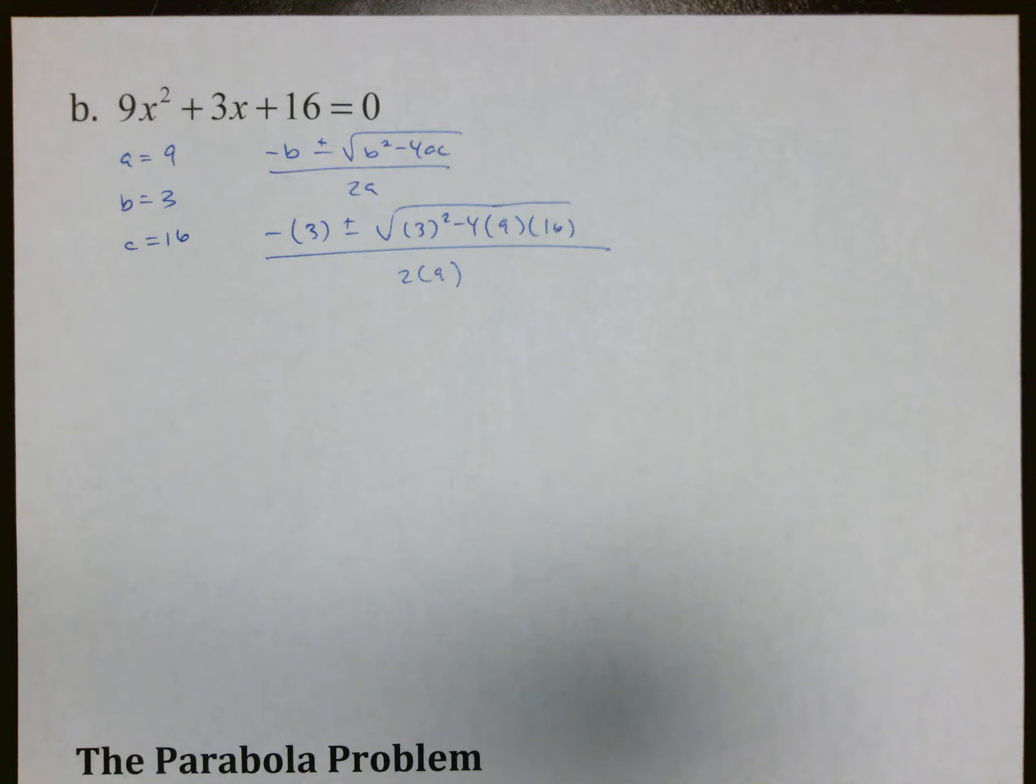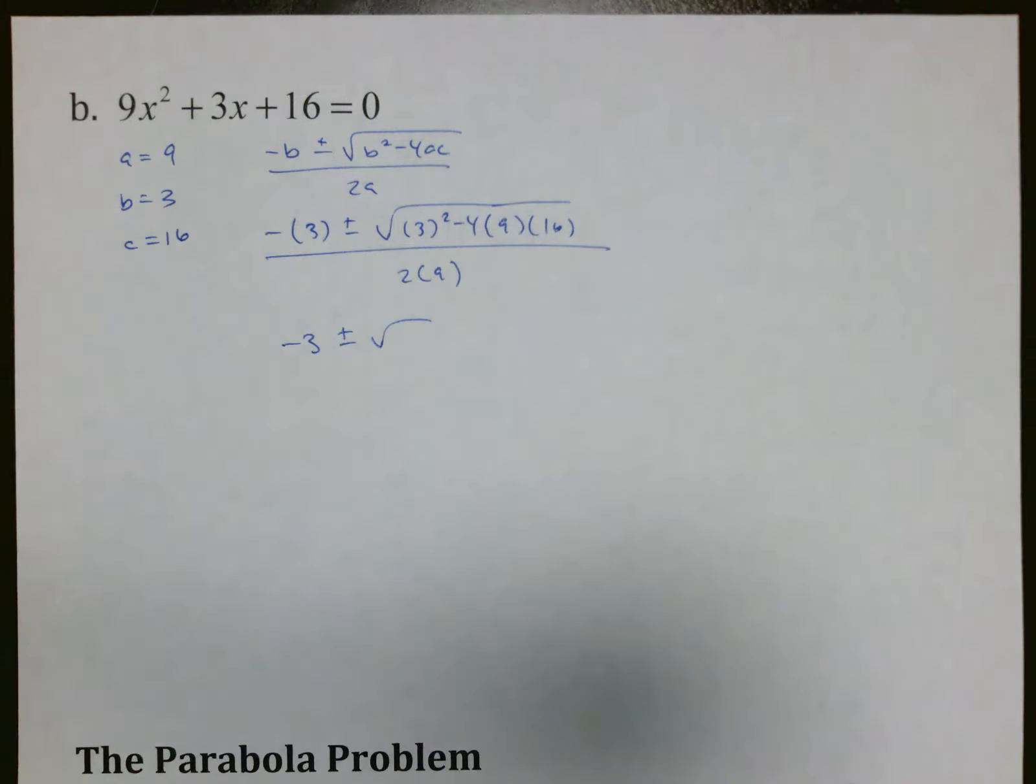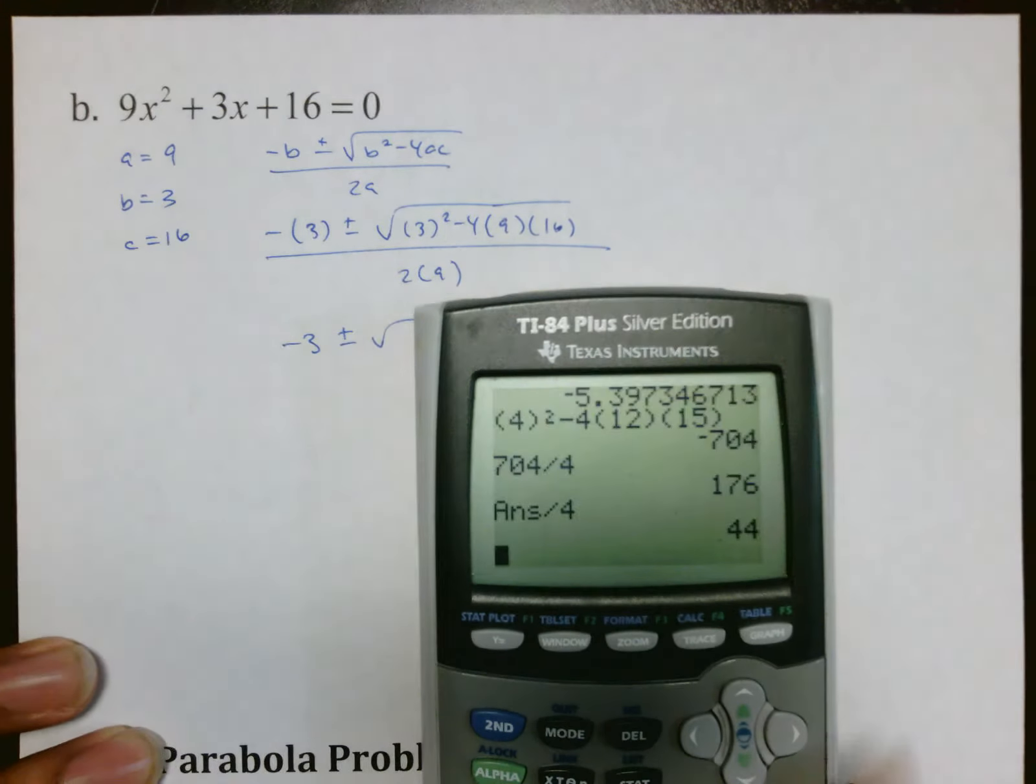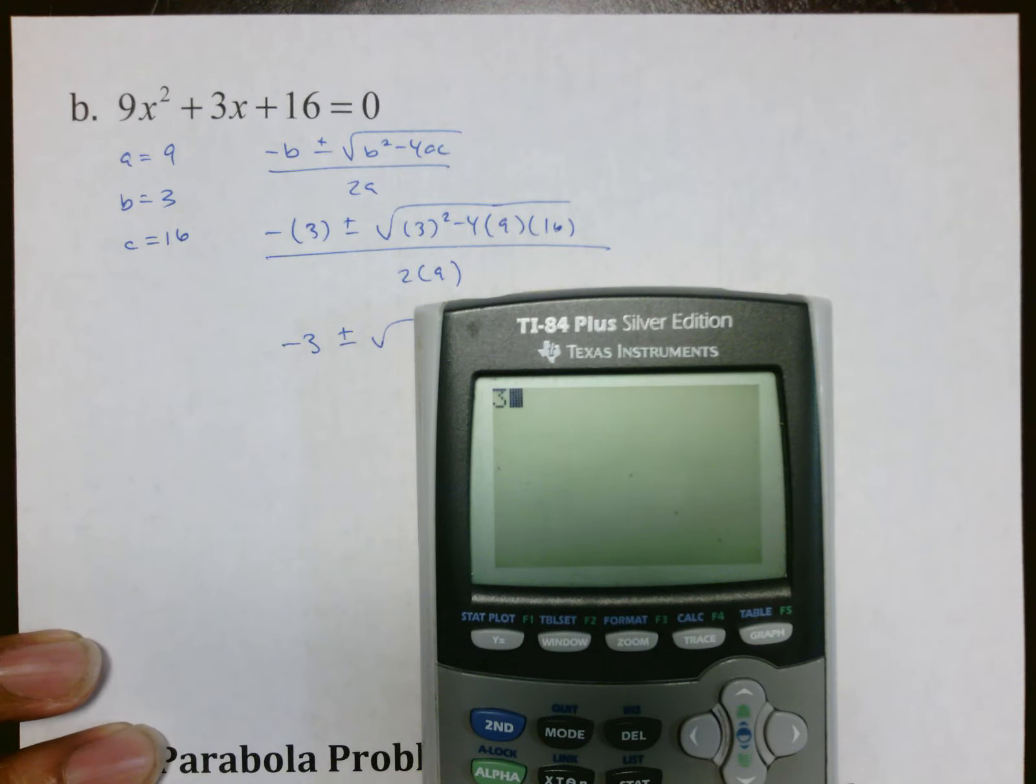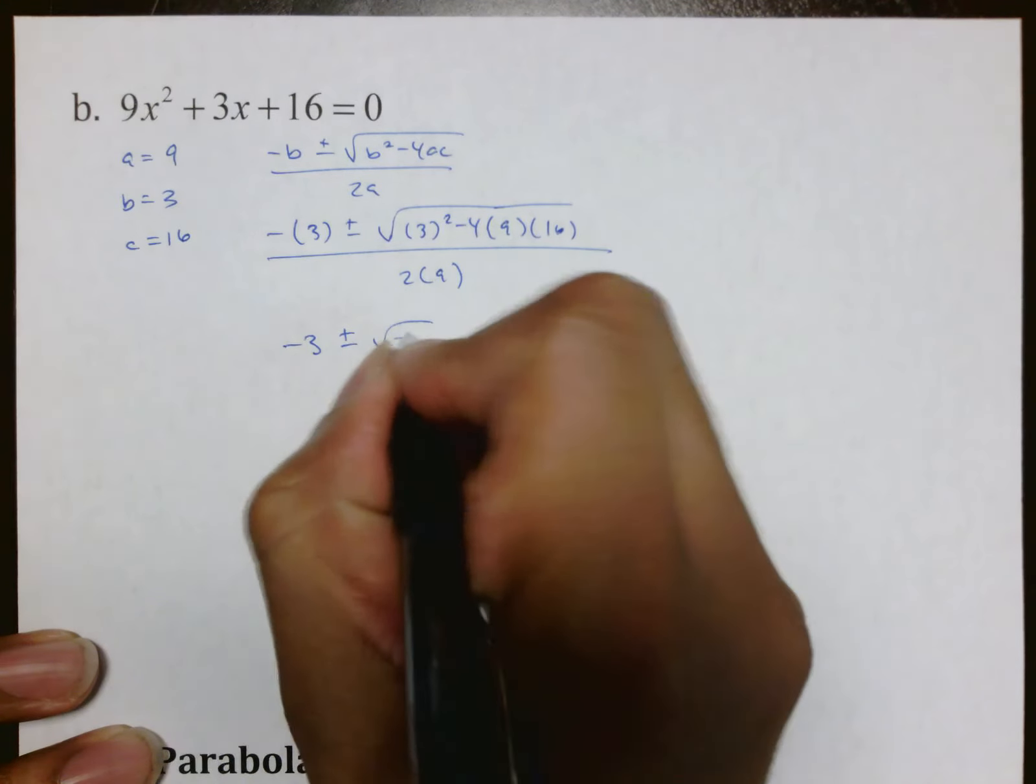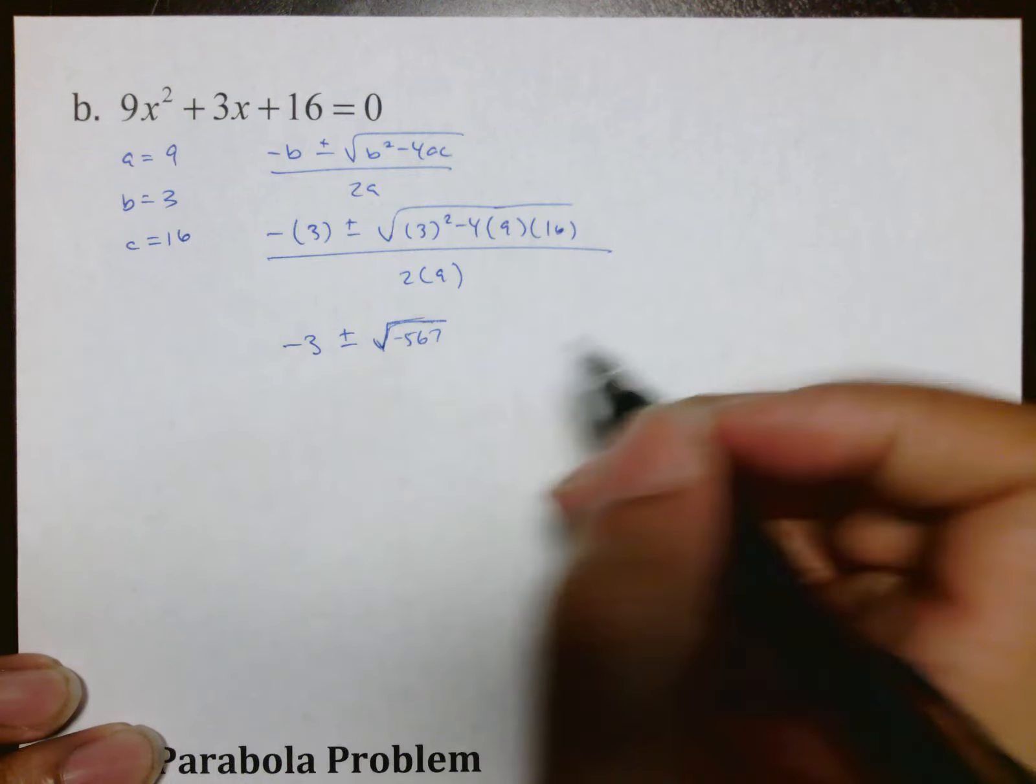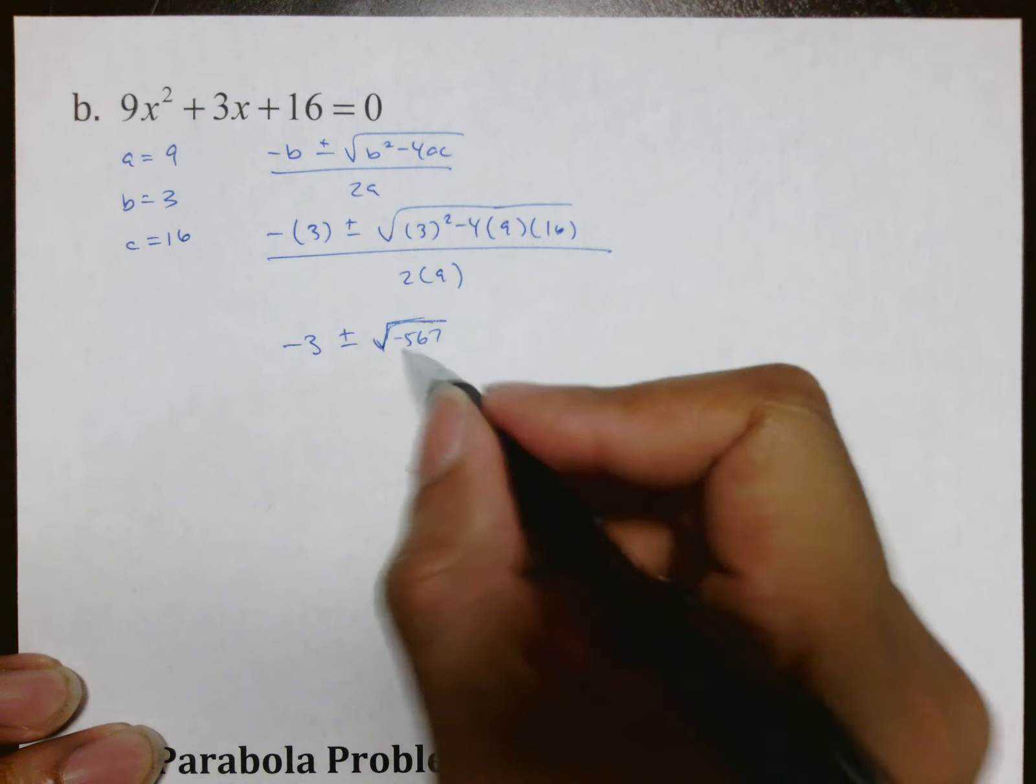Again, simplifying one thing down at a time, we end up with negative 3 plus or minus root, I don't know what again, so let's go ahead and do that part underneath. 3² minus 4, 9, 16, which is negative 567. That's scary to me, but let's see what happens. That's 7, 12, yeah, so 18.